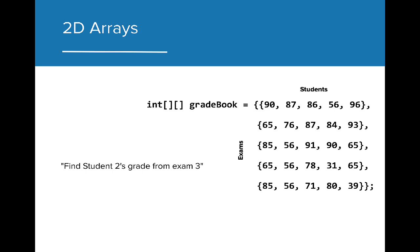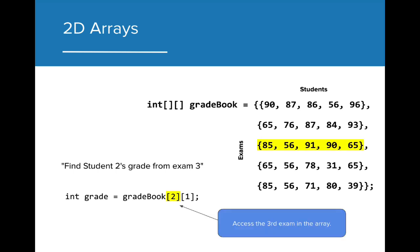If we wanted to find the exam scores for a particular student, let's say find student 2's grade for exam 3, we can do so in a similar fashion to how we searched for values in a 1D array. To access a value in a 2D array, we use the same notation as a 1D array, but with an additional call to access the individual element within an array. The value found in the first set of brackets in a 2D array accesses the array at a particular index. In this case, we are accessing the third exam in the array, which can be found at index 2 in our 2D array.